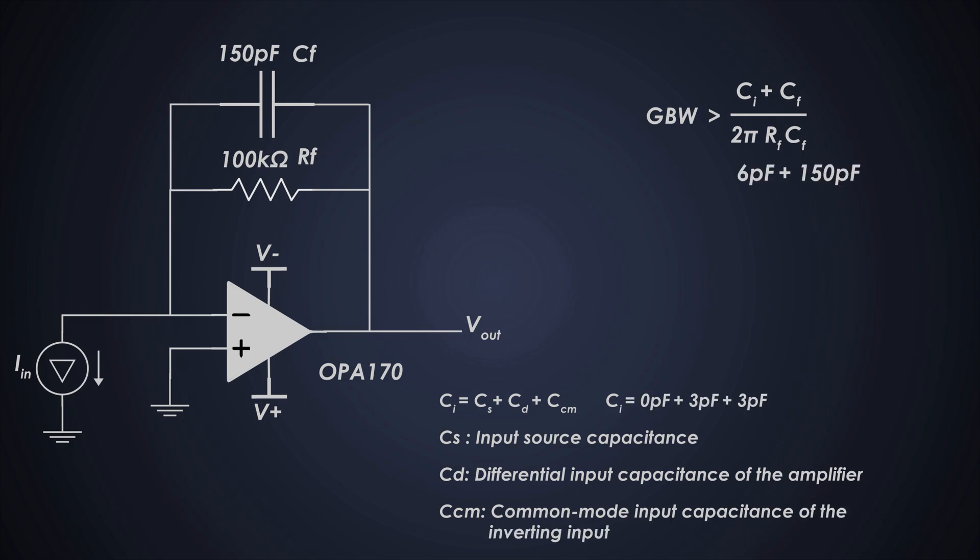And from this formula, the required gain bandwidth product is 11.03 kilohertz. And the gain bandwidth of the OPA170 is around 1.2 megahertz, which is more than sufficient for our system.